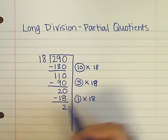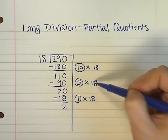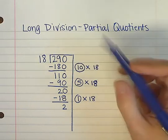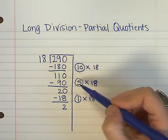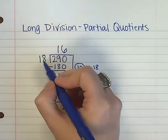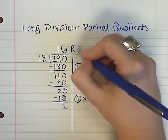So now I want to go back and find out how many groups of 18 did I put into 290? Did I take out of 290? I took out 10 groups, and 5, and another 1. So I took out 16 groups of 18, and I still have 2 pieces left over.